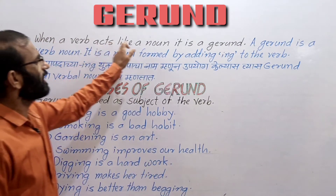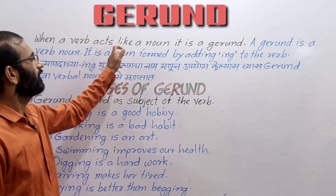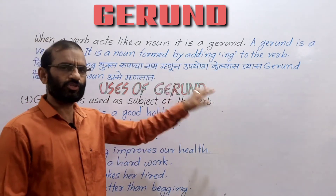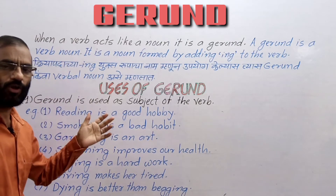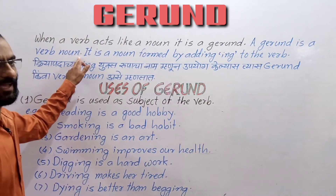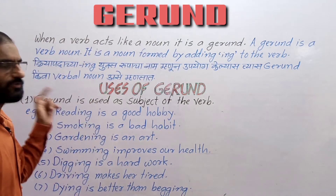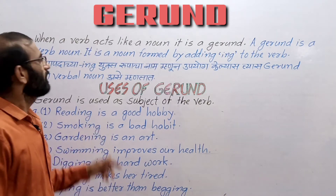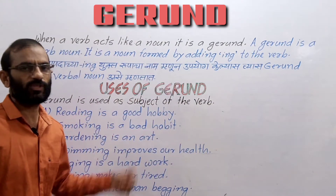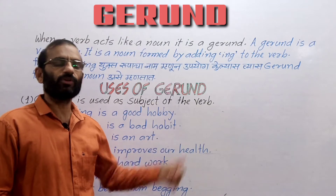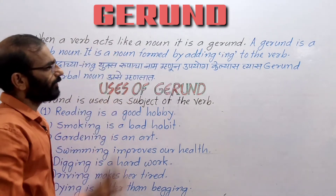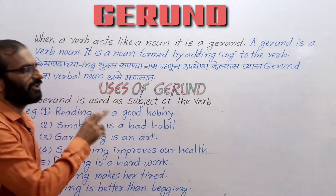A gerund — when a verb acts like a noun. It is derived from the verb. It is a noun formed by adding ING to the verb. In Marathi we say it is a verbal noun formed from a verb root by adding ING.